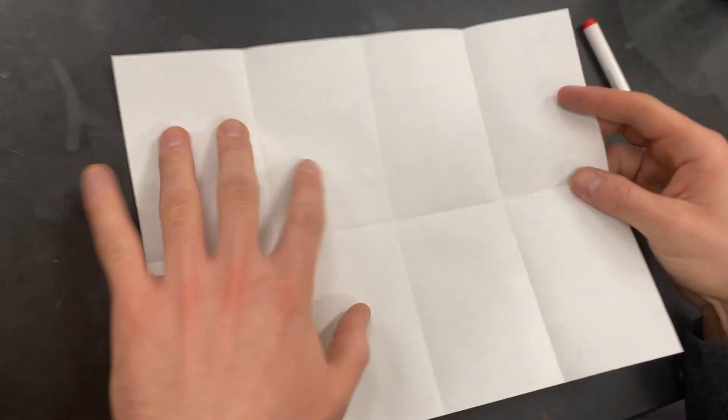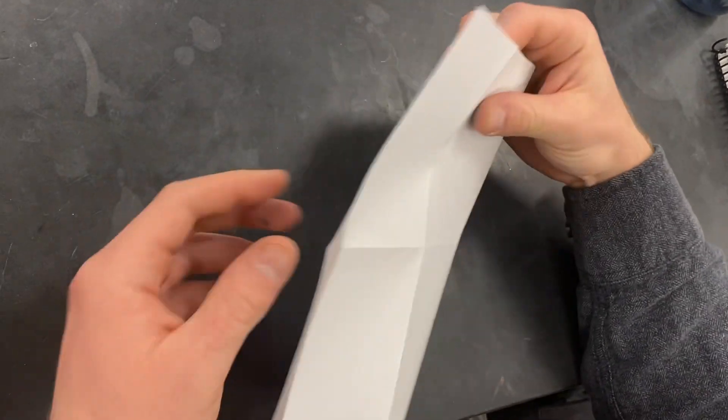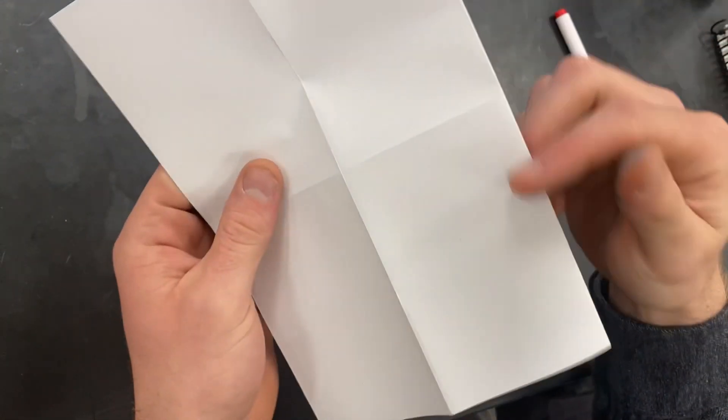Now this is when it gets a little tricky. So now you fold it back to the hamburger style. And you've got one side that's open, and this side's closed.